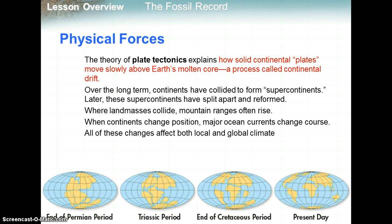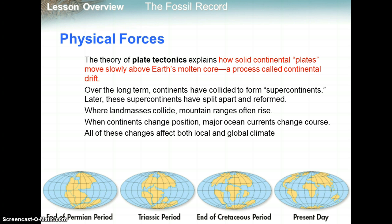Over the long term, continents have collided to form supercontinents. Early on, we had one massive continent called Pangaea. Later, supercontinents split apart and reformed into what we have present day. When land masses collide, mountain ranges often rise. When continents change position, major ocean currents change course. All these changes affect both local and global climates.